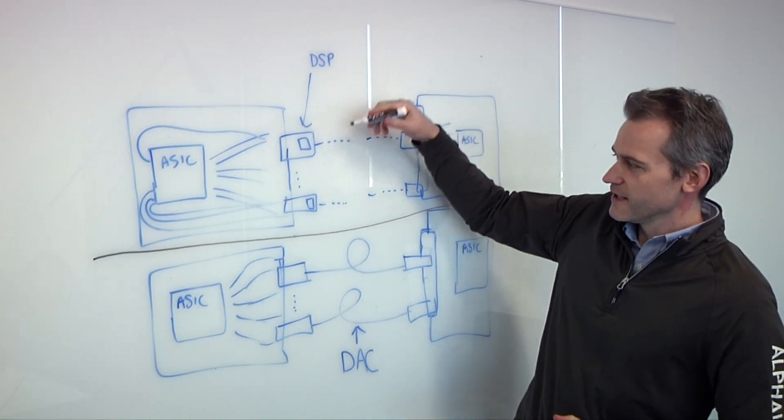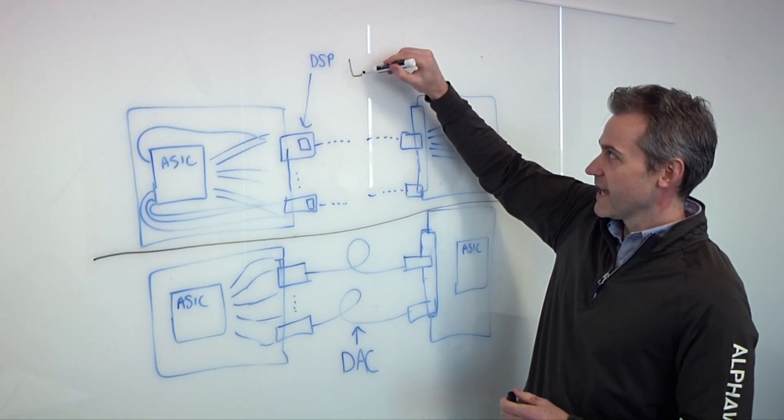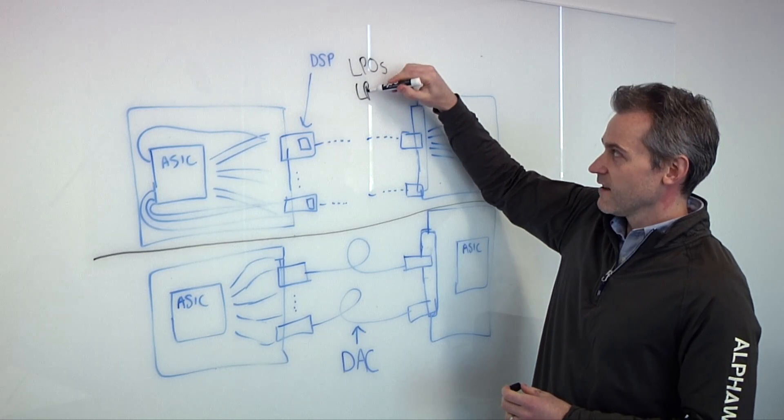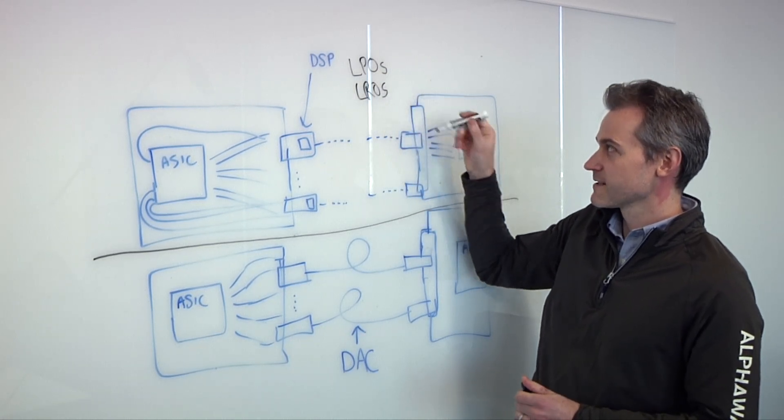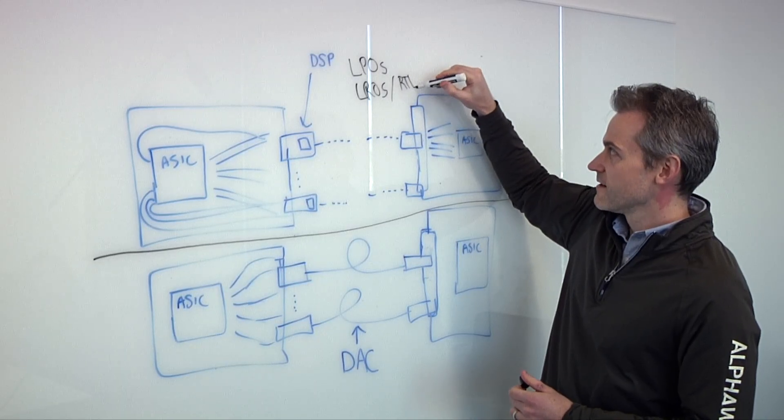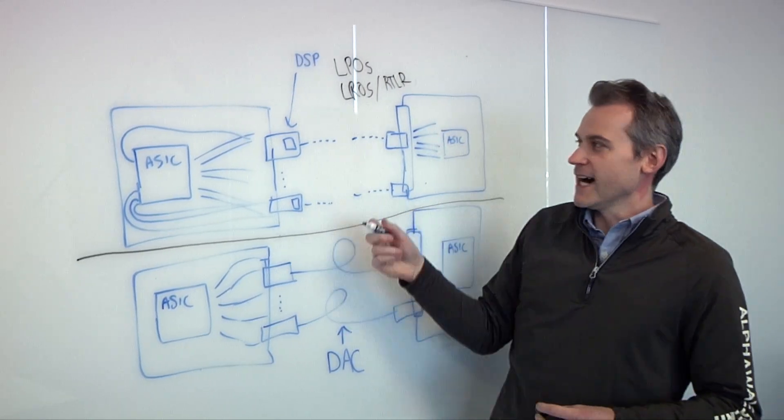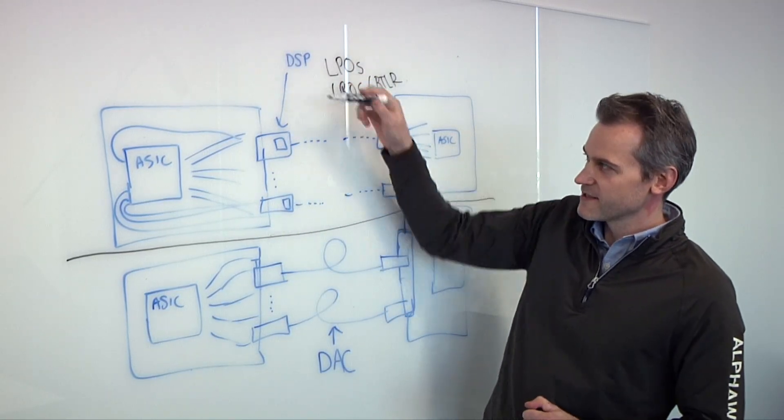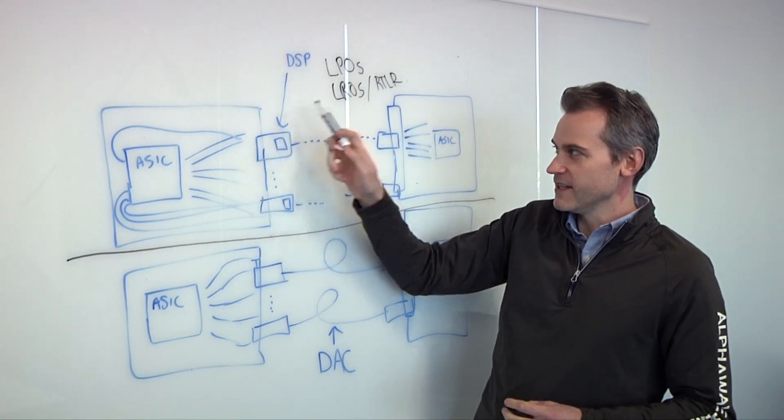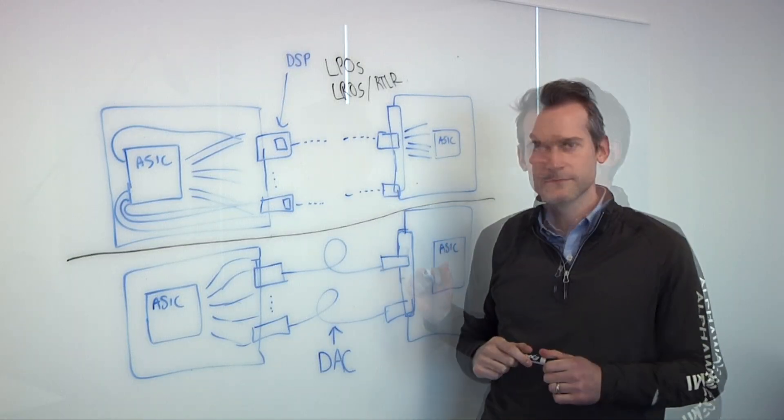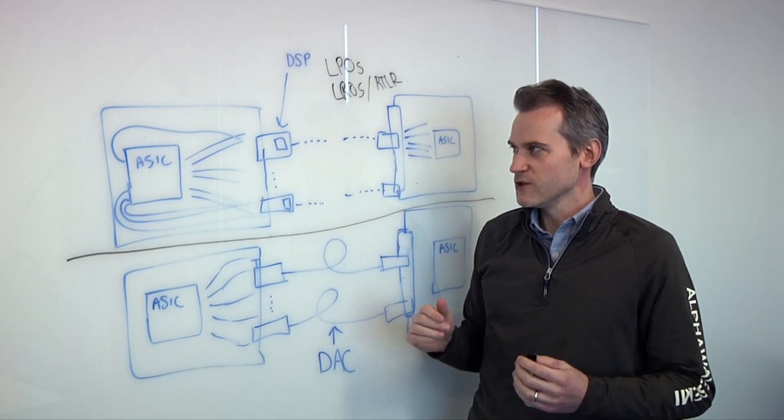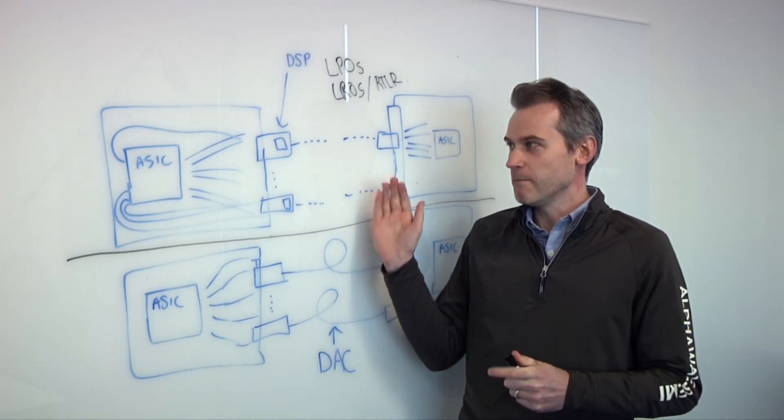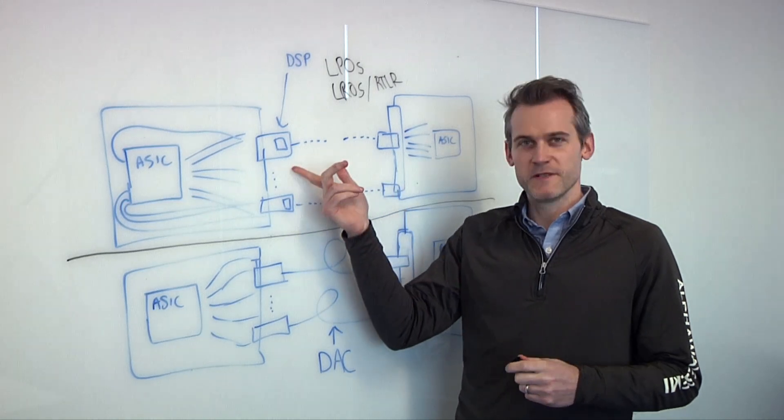What we've been seeing is different implementations of optics modules. Not only are there just purely retimed optics modules, but now we have LPOs, which are linear pluggable optics, and LROs, which are linear retimed optics, or sometimes it's called RTLR. The LPO just completely strips this DSP out of the optics module. There's just an electrical to optical and then an optical to electrical function on either side. What's the advantage of that? The advantage is you get the reach of the optics with not as much of a power hit when compared to a DSP optic.